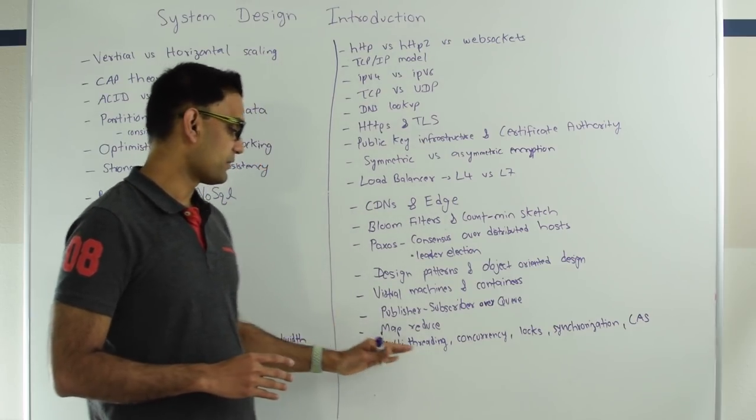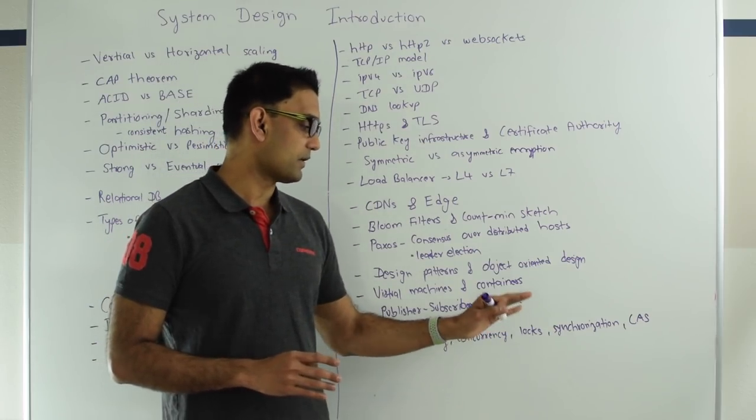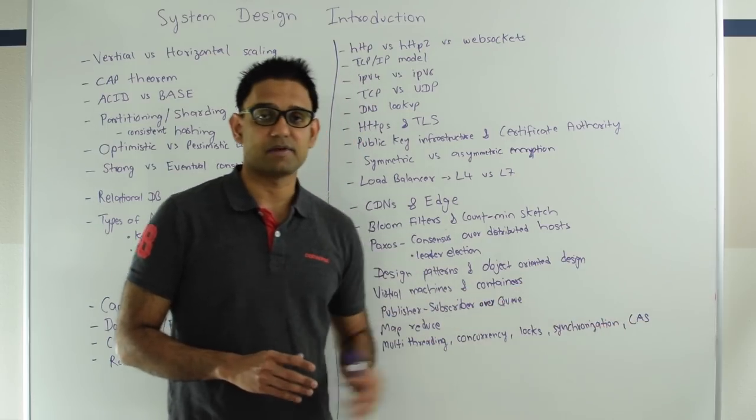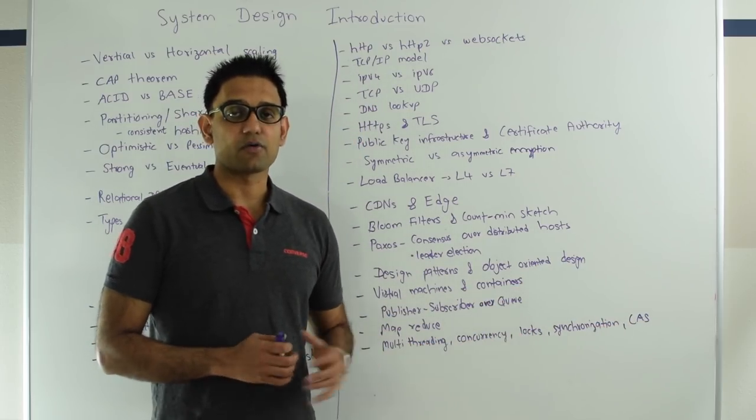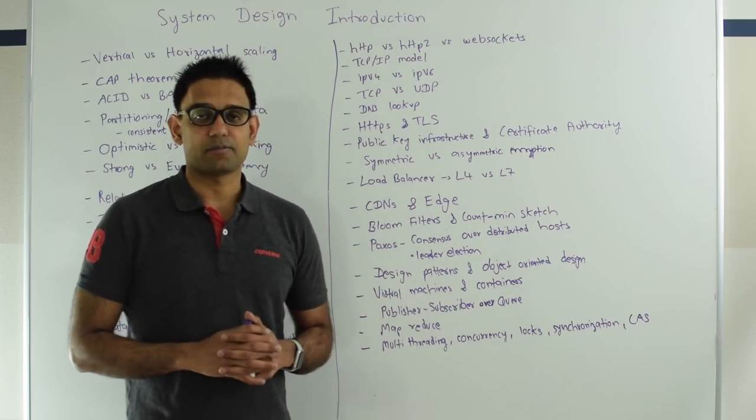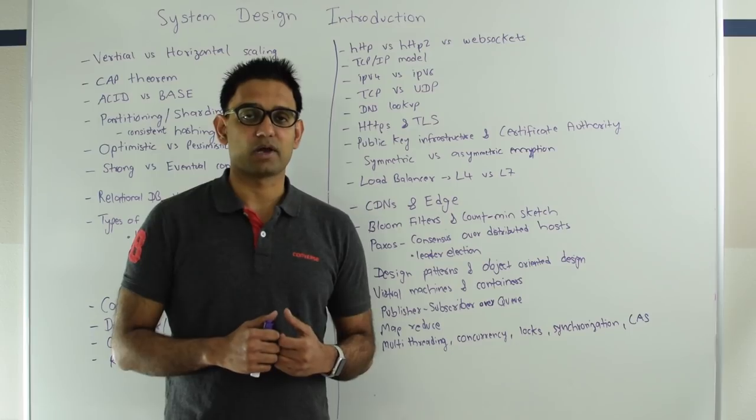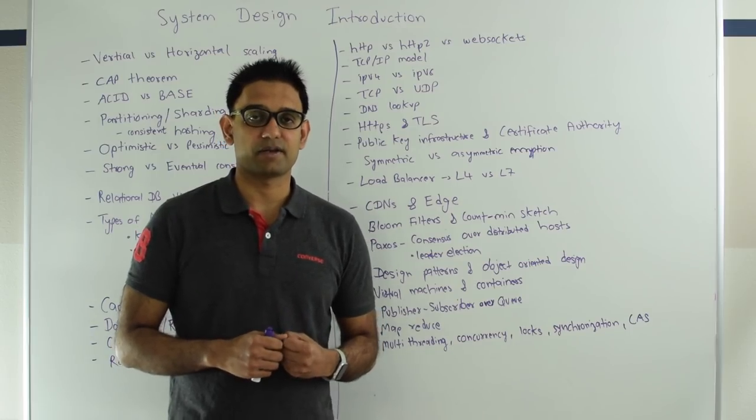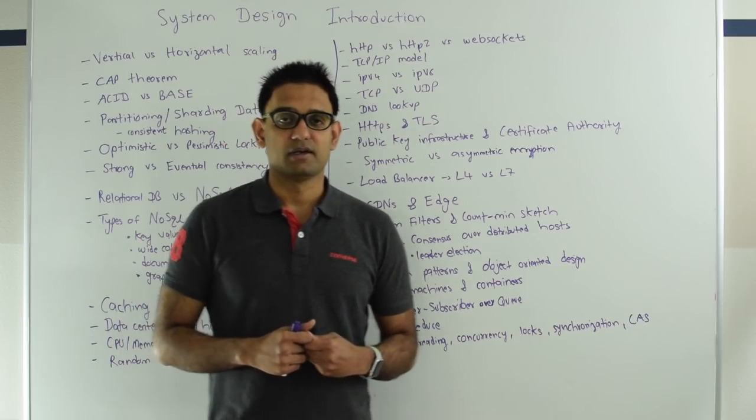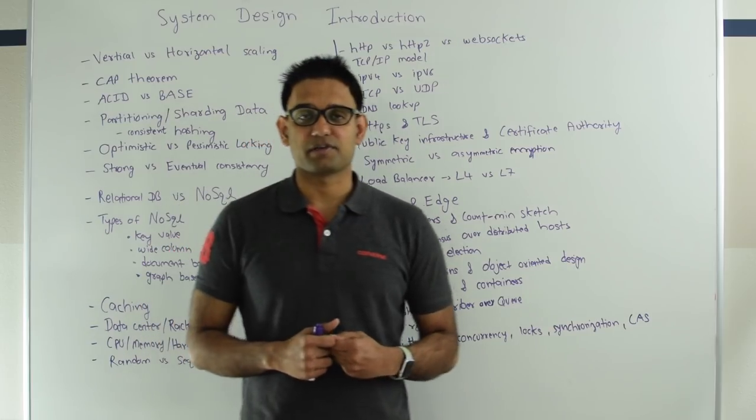And finally we have multithreading, concurrency, locks, synchronization and compare and set semantics. And these are all very important to know in the world of multithreading. Some programming languages like Java comes with these things built in. While other languages like C, you have to depend on the platform specific implementations.